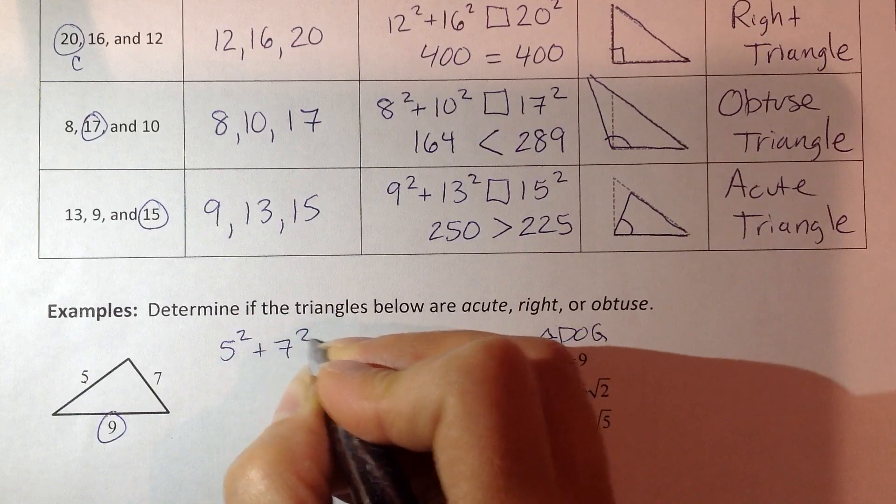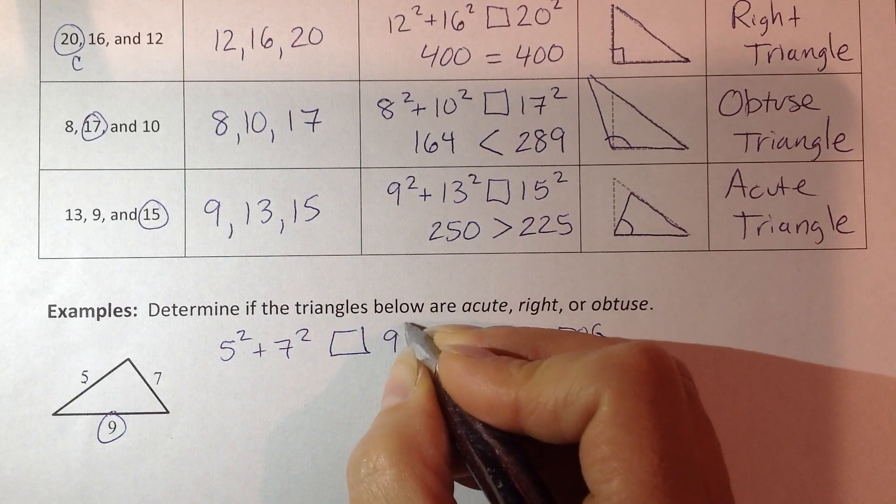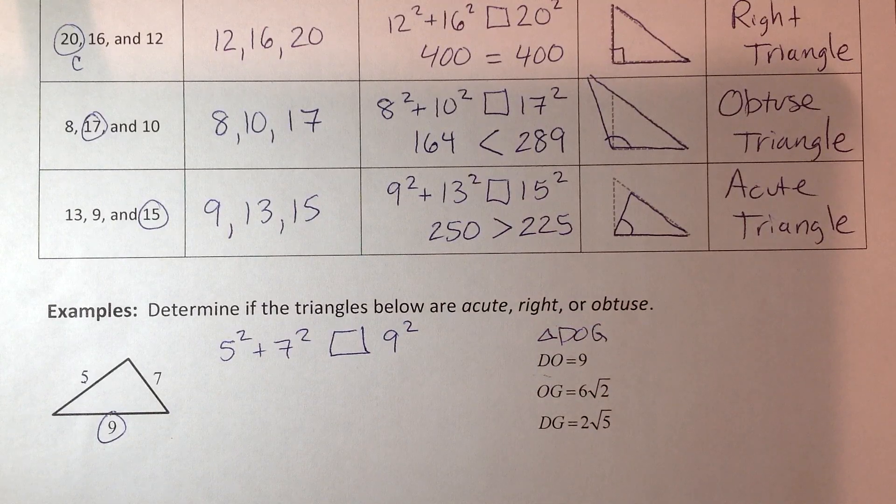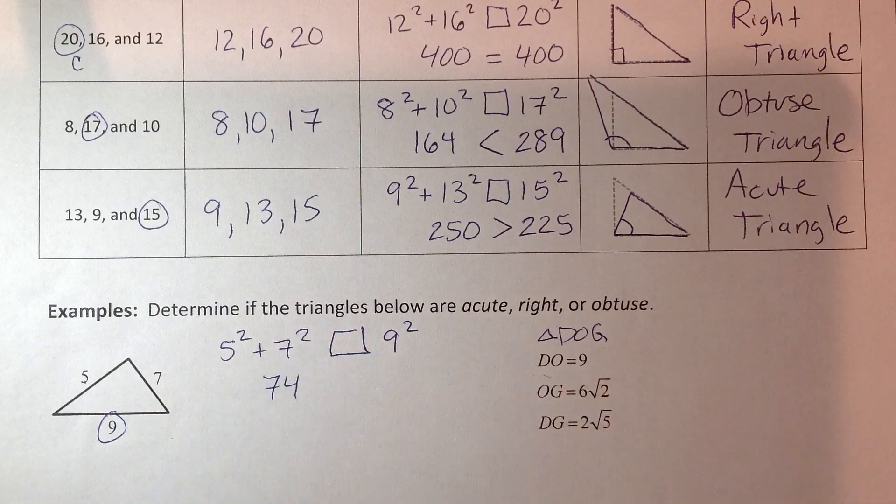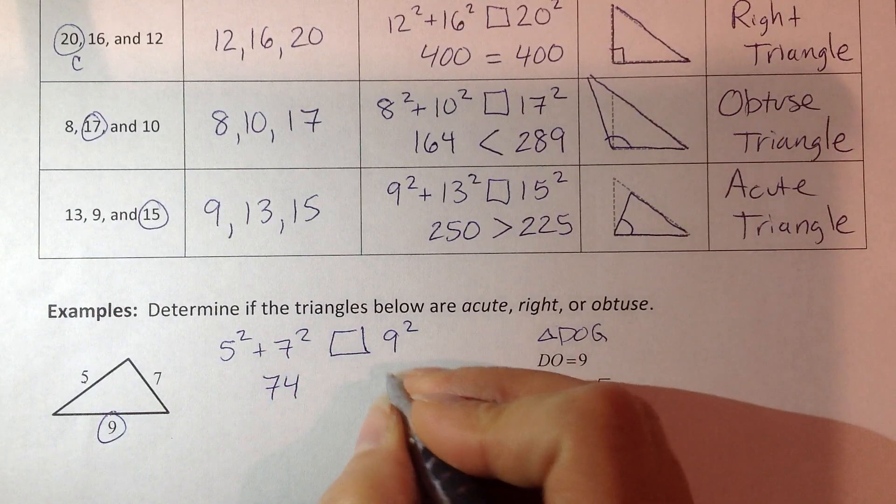5 squared plus 7 squared, how does that compare to the longest one squared? So 5 squared plus 7 squared, 74.